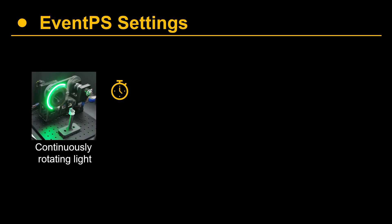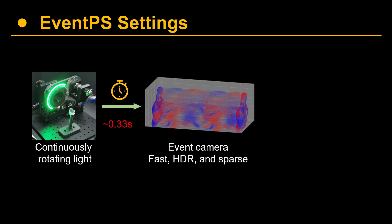In our EventPS setup, we propose to use a high-speed, continuously rotating light source. We use an Event Camera to capture the object illuminated by this light source. The Event Camera registers the log intensity change of each individual pixel independently. It is famous for its high temporal resolution, high dynamic range, and sparse and compact event representation.